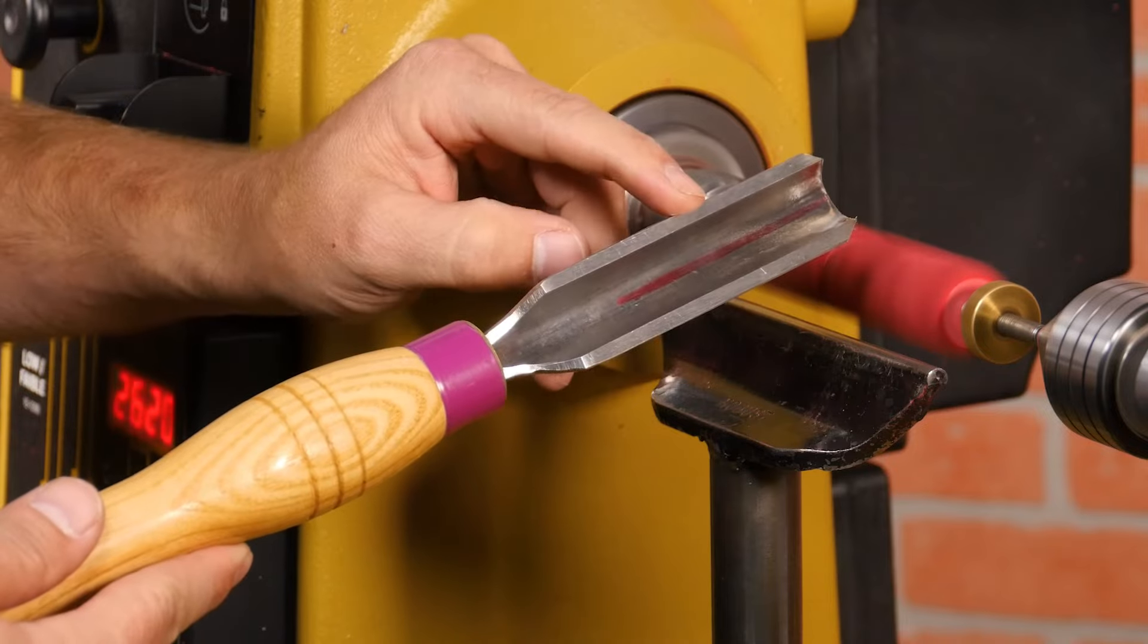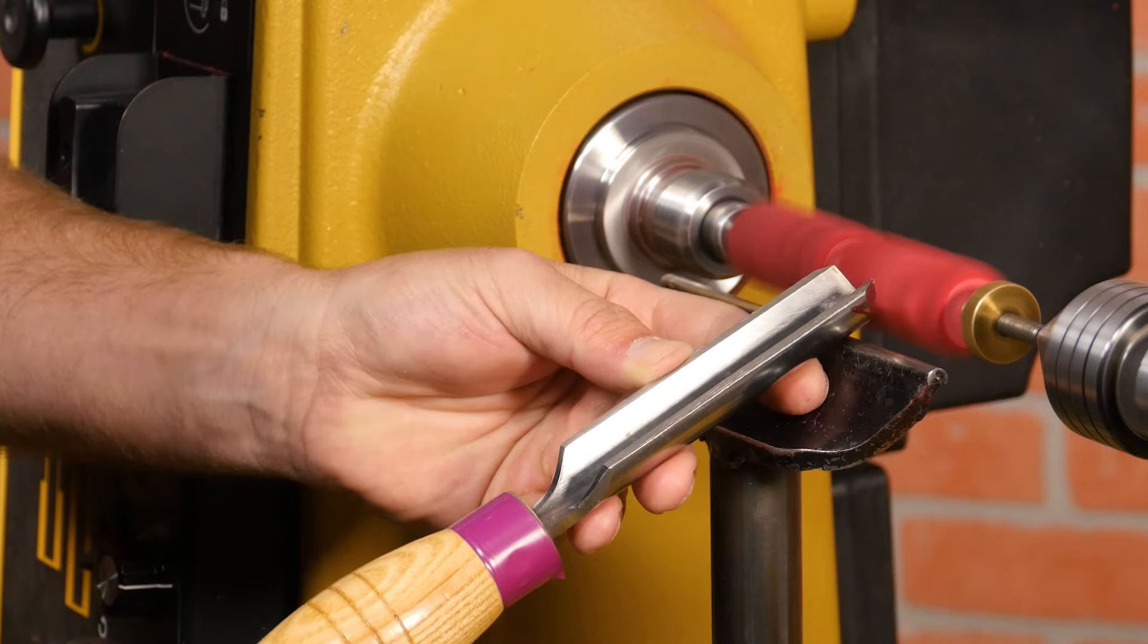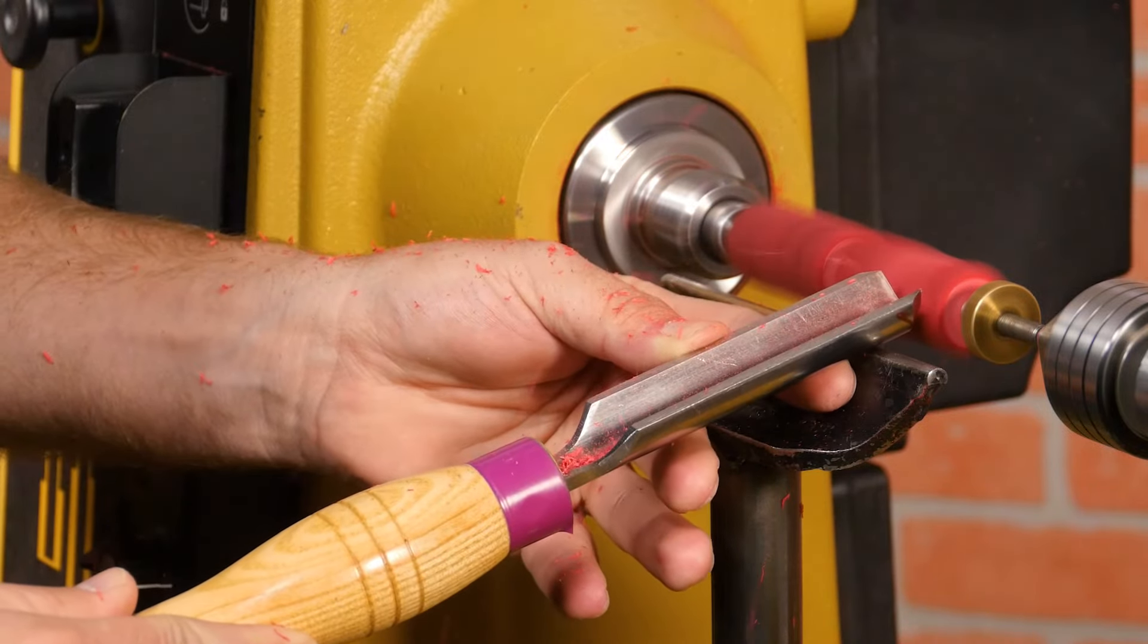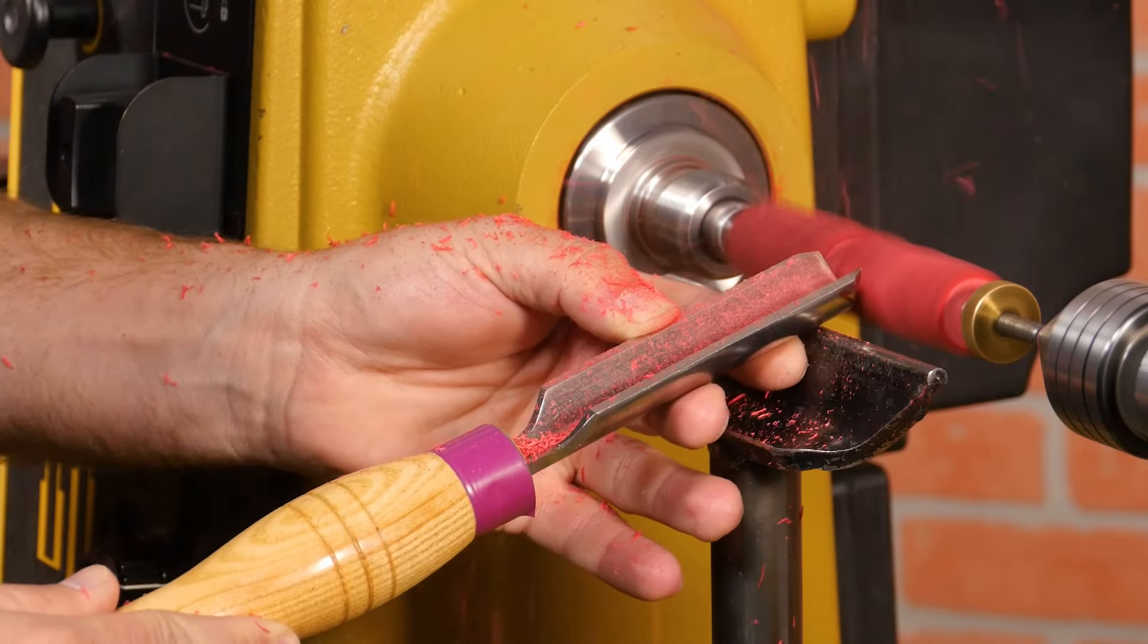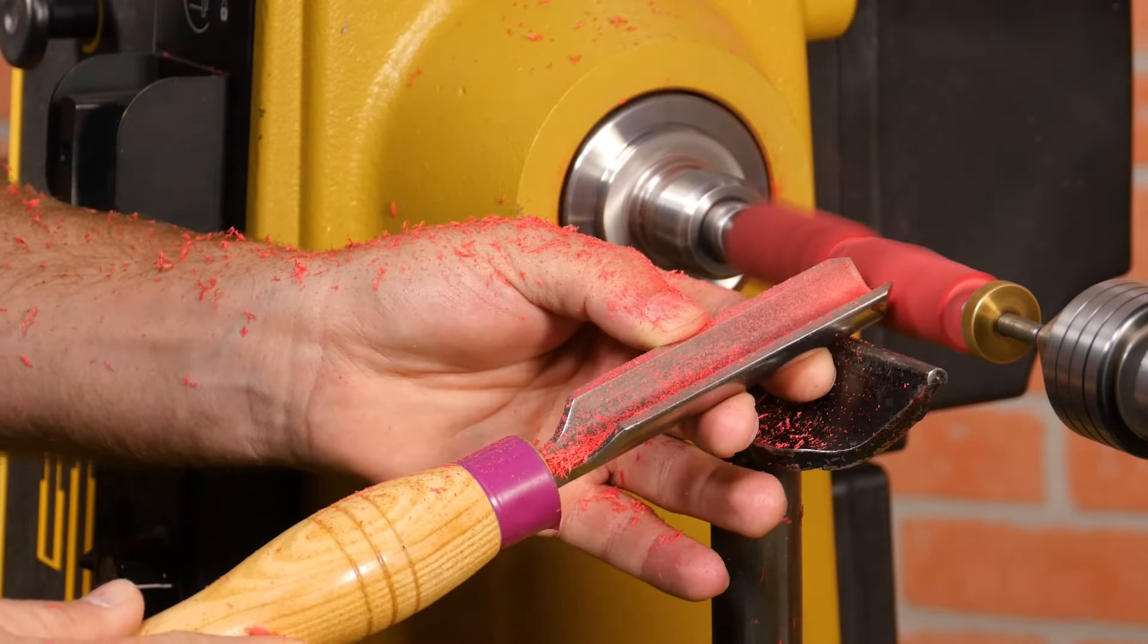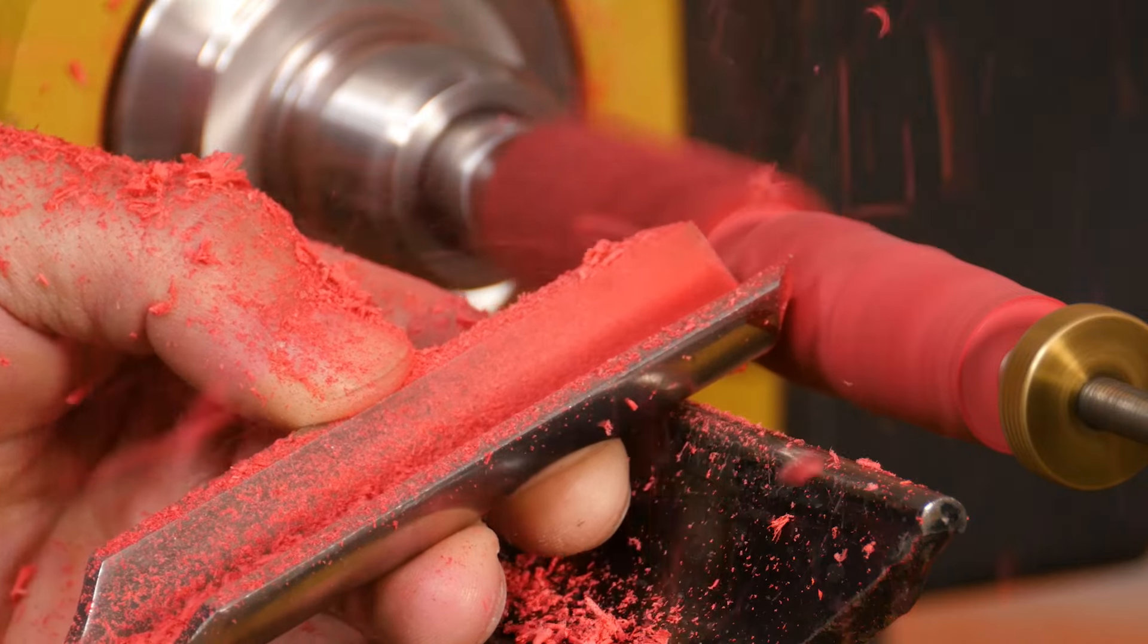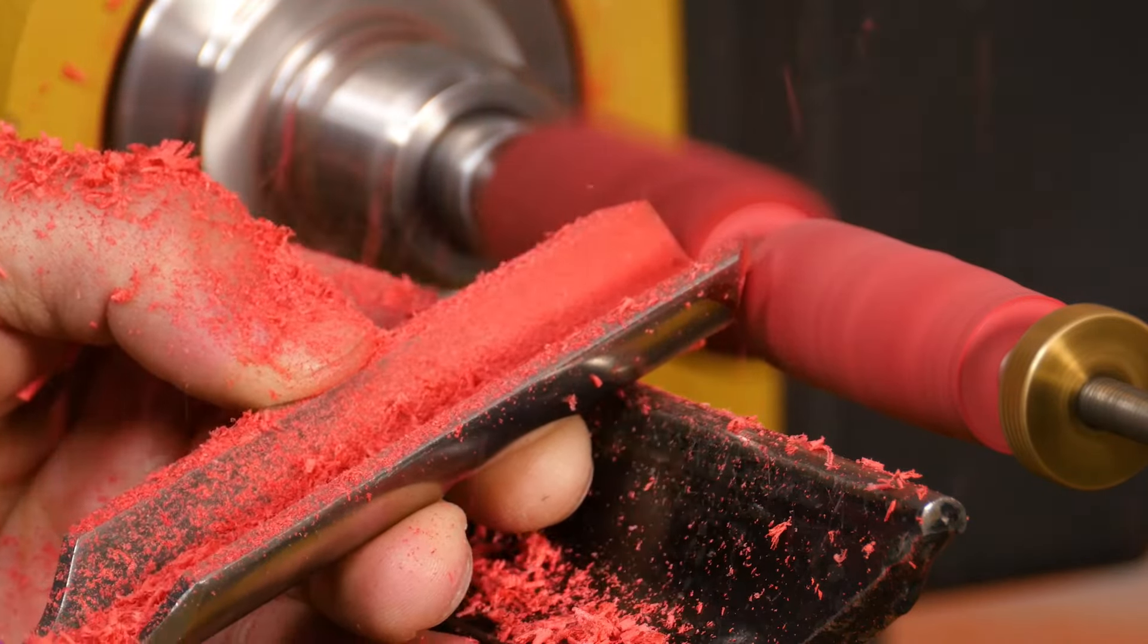First up is the spindle roughing gouge. Keep the tool handle low by your side and place it on the tool rest roughly in the middle of the blank. Then slowly raise the handle until the tool starts cutting. Keep the flute open at the 12 o'clock position and work from the middle towards the end of each blank. Take light cuts to prevent chipping.